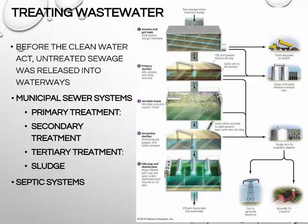Alternatively, the effluent can be retained and used as reclaimed water for irrigation or industrial purposes. People in rural areas not connected to a municipal system typically use septic systems — underground tanks that separate solids and oils from water. The water drains into a field through perforated pipes where microbes decompose pollutants, and the solid waste is periodically pumped out and sent to a landfill.